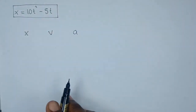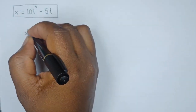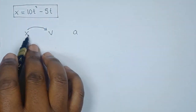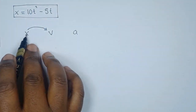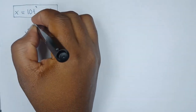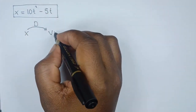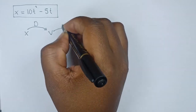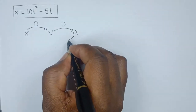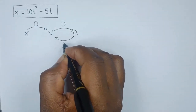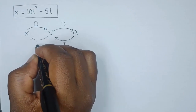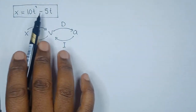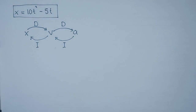If we want to get an expression for velocity and we have been given displacement or position, we have to differentiate. Then if we want to get acceleration from velocity, we again differentiate. The reverse is simply integration. So we have been given an expression for position or displacement.